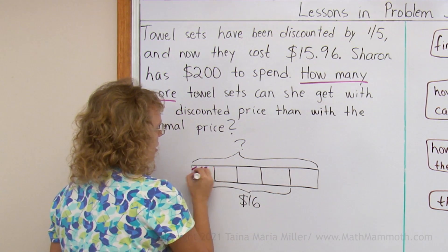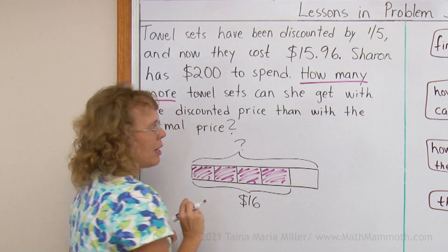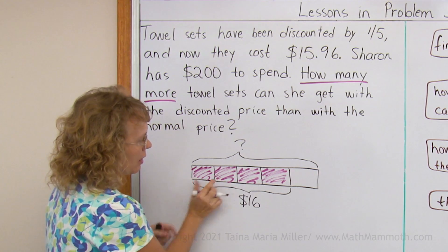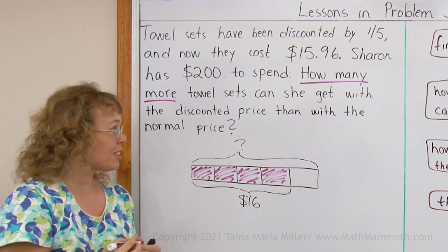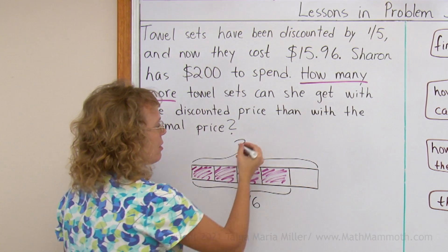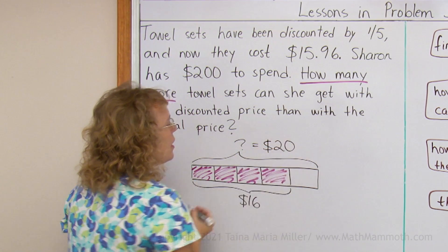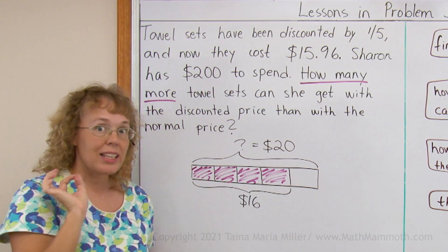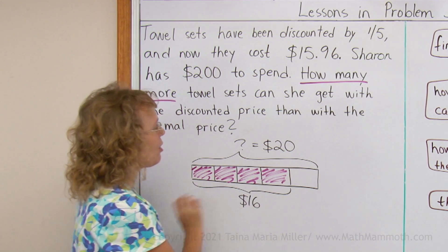Can you figure out the normal price? Think of one block in the model. Well, one block here is one-fourth of the four parts remaining, or $4. So this whole thing is 5 blocks, or 5 times 4 = $20. In reality, the normal price is a little bit less than $20 because $15.96 is a little bit less than $16.